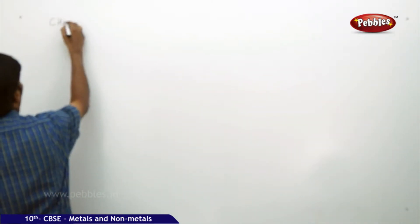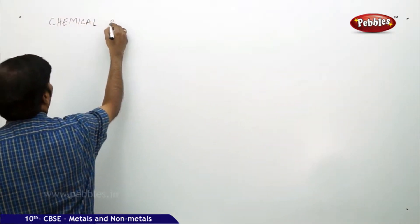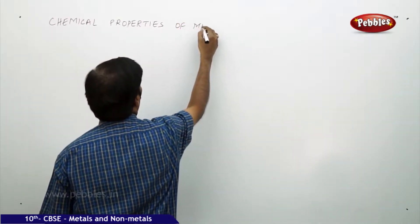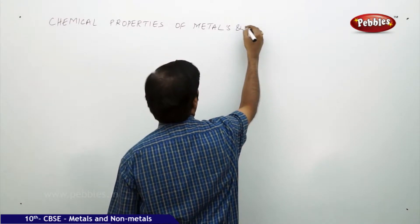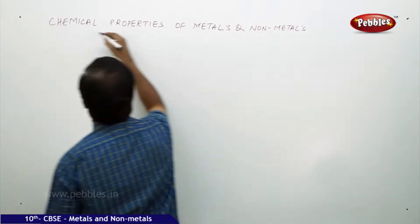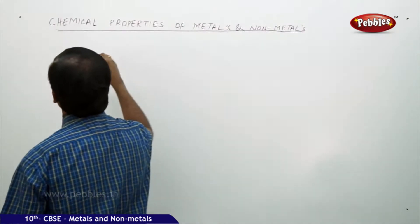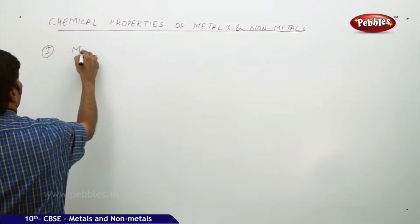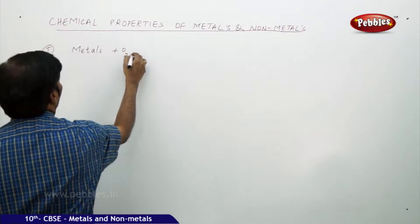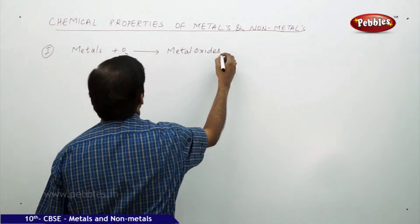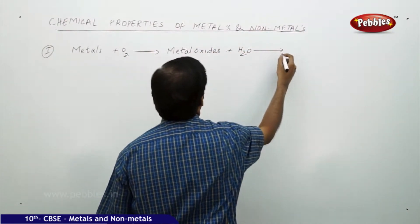The next part of the discussion is chemical properties of metals and non-metals. If you take metals, for example, when they are treated with oxygen they form metal oxides, and these metal oxides in turn, when they are treated with water, they give bases.